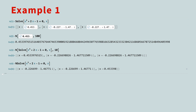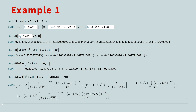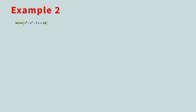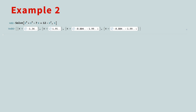You might wonder: if Mathematica knows the cubic formula, why does it return root objects instead of exact radical solutions? You can request the cubic formula be used by setting the Cubics option to True. The solution in radicals is quite messy, which is a good reason to return root objects by default. For a quartic equation, the same applies — solutions are returned as root objects rather than busy radical expressions, but you can see the full expression by setting the Quartics option to True.